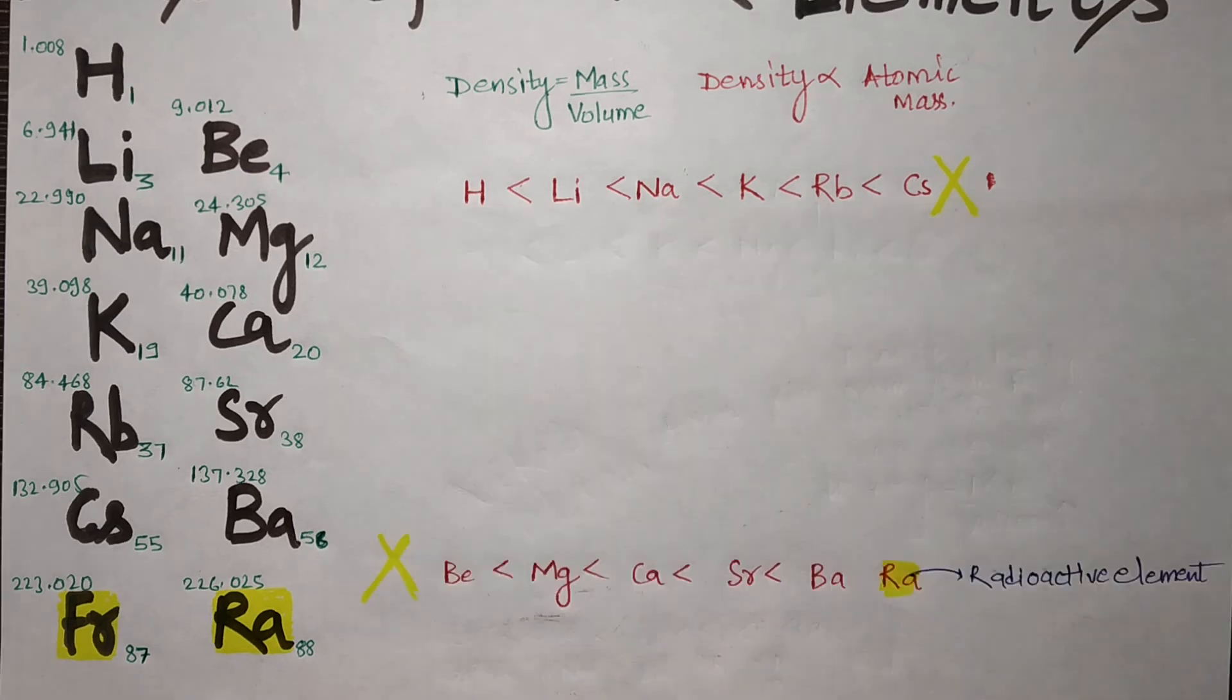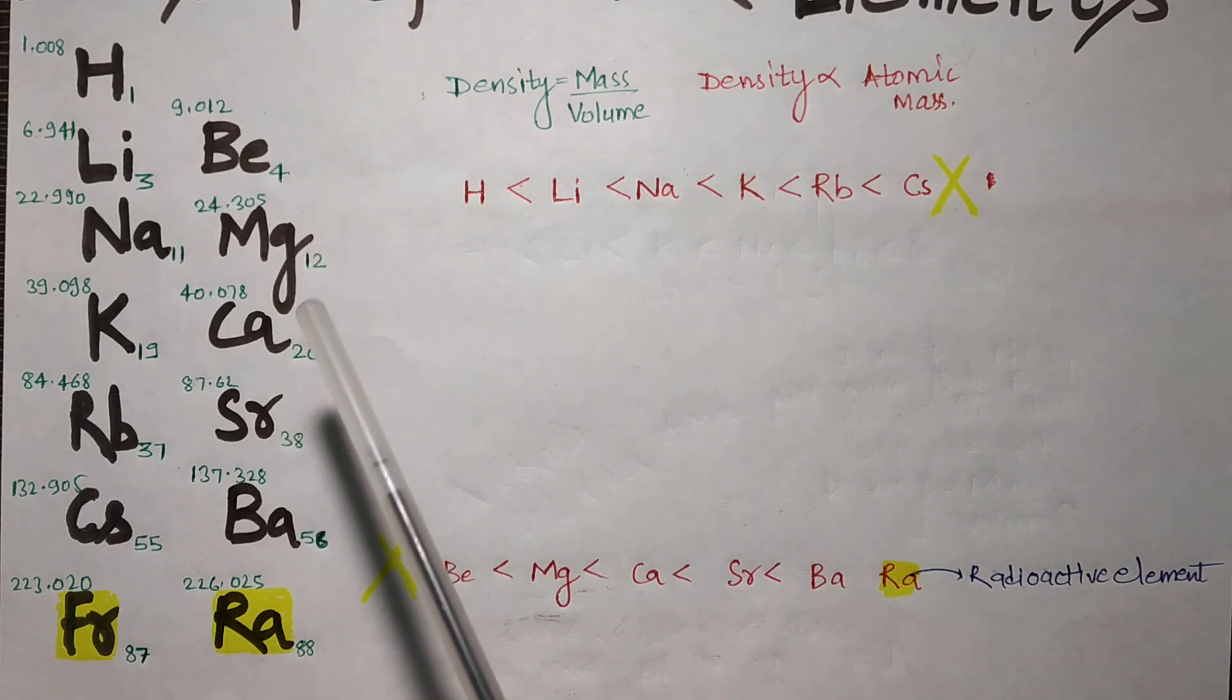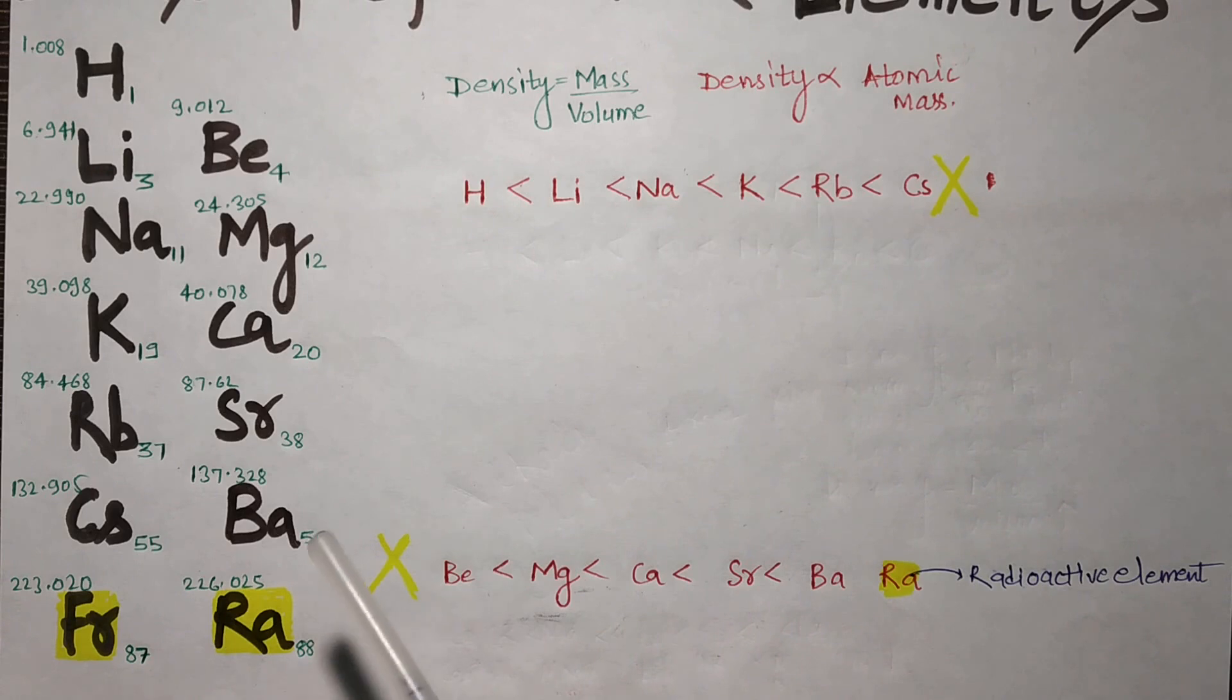Now let's talk about alkaline earth metals' density. As we know: beryllium, magnesium, calcium, strontium, barium, radium. In this whole group, radium is a radioactive metal, so we will not include this in the trend.